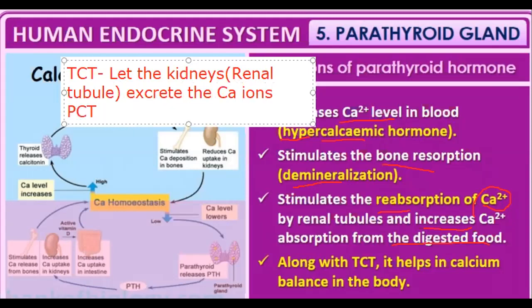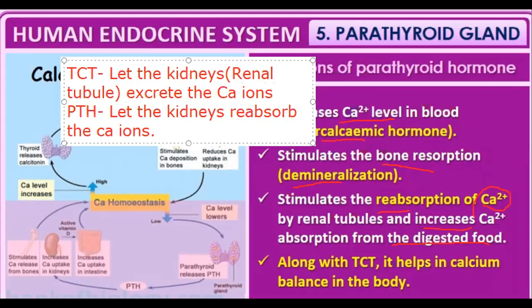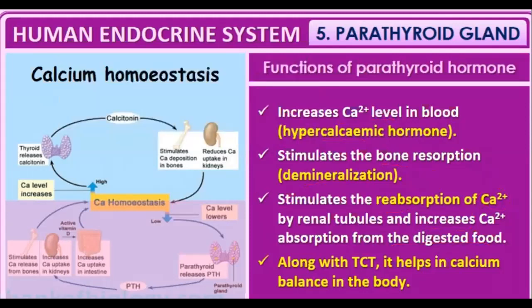PTH — the parathyroid hormone — causes the kidneys to reabsorb calcium ions, and increases calcium absorption from digested food. In this way, PTH and thyrocalcitonin (TCT) act opposite to each other. Together, TCT and PTH help maintain calcium levels in the blood.